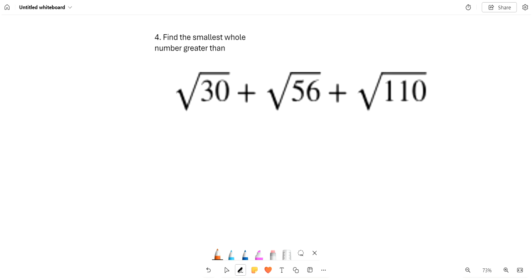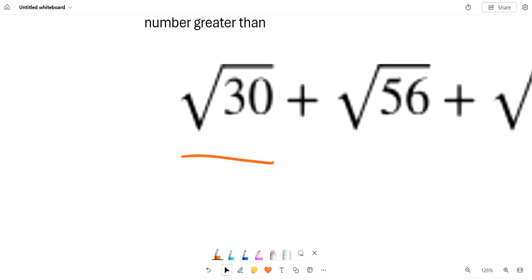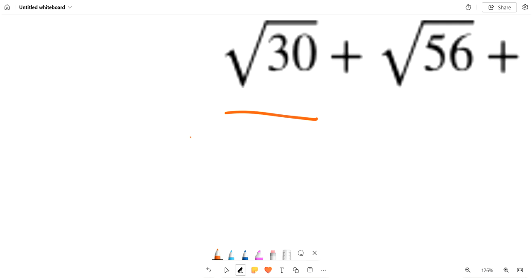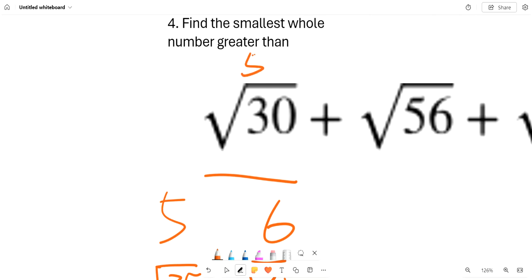So let's try to estimate each of these numbers here. Square root 30 is in the smack middle of 5 and 6, which are respectively square root 25 and square root 36. So let's assume this is about 5.5.